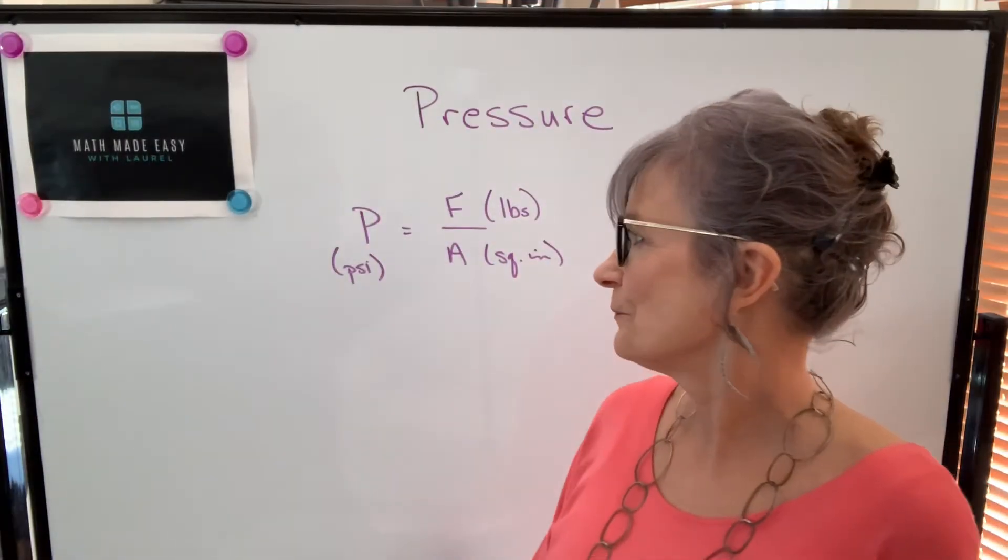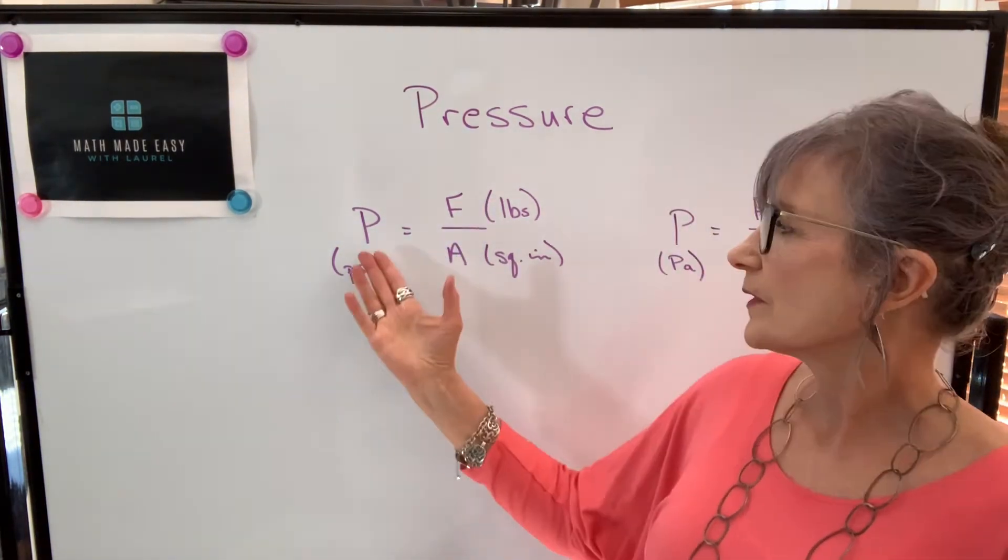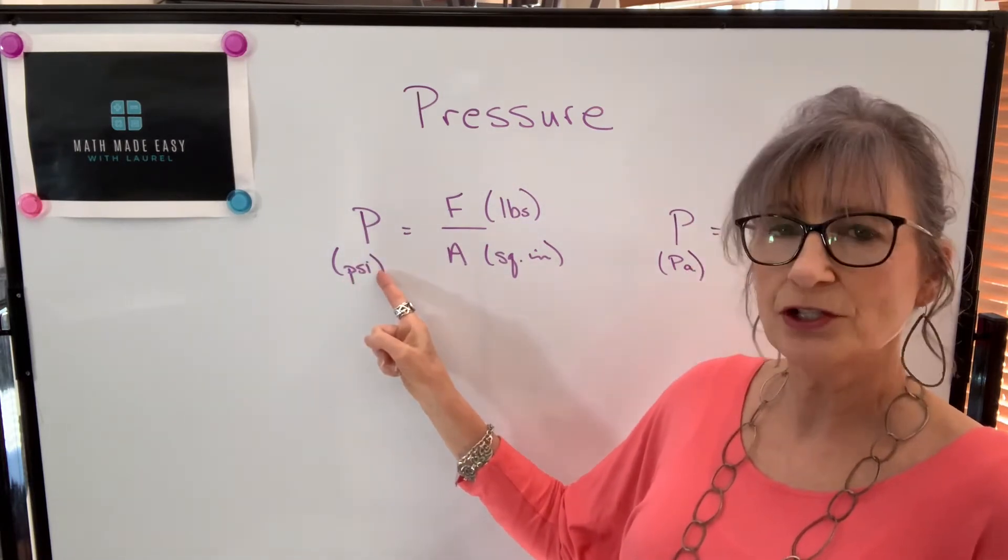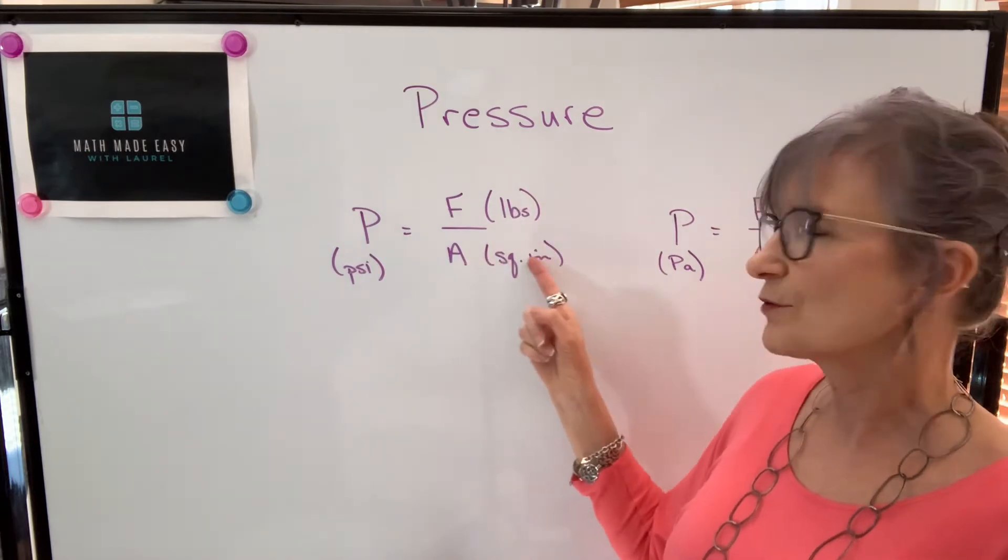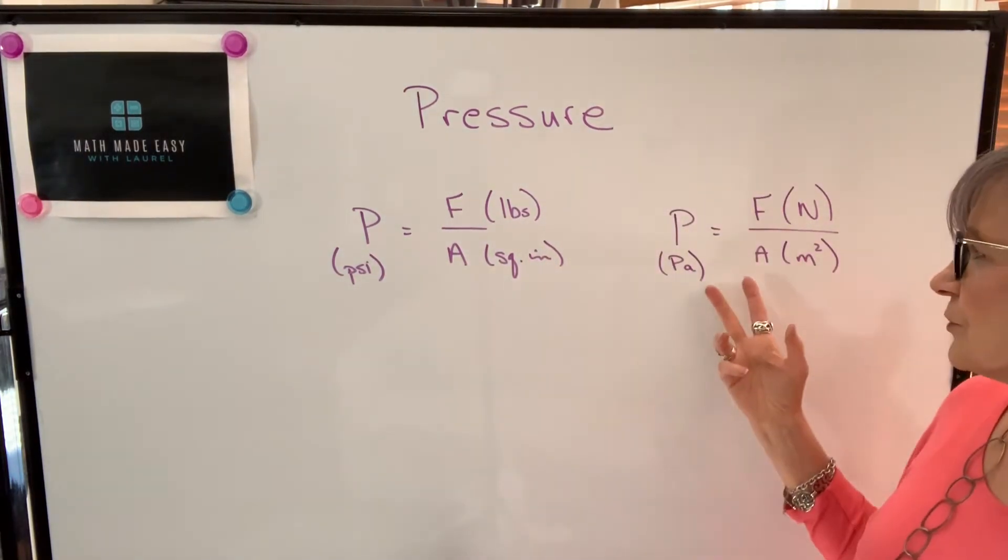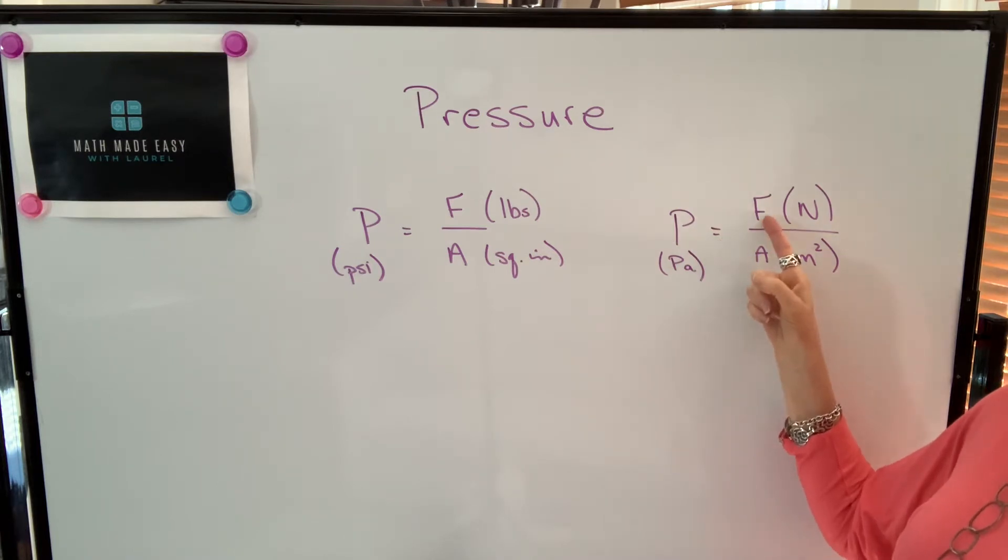The definition of pressure is always force over area. Units are typically pressure in pounds per square inch, which means force is measured in pounds and area in square inches. If you're dealing with metric units, the base unit for pressure in the metric system is pascal, defined as the force of one newton over an area of a square meter.